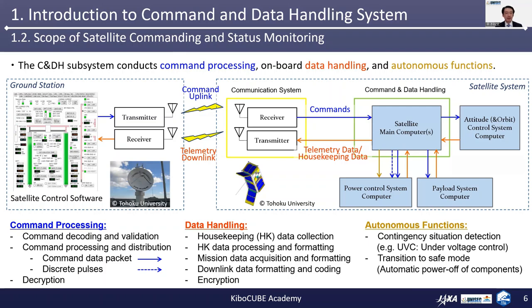The second one is data handling, illustrated as red in this diagram. The C&DH system conducts housekeeping data collection, HK data processing and formatting, mission data acquisition and formatting, and downloading data formatting and coding. Similarly, C&DH systems can be responsible for encryption of the data to be sent to the ground station. Encryption can also be conducted by the digital system inside the communication system.